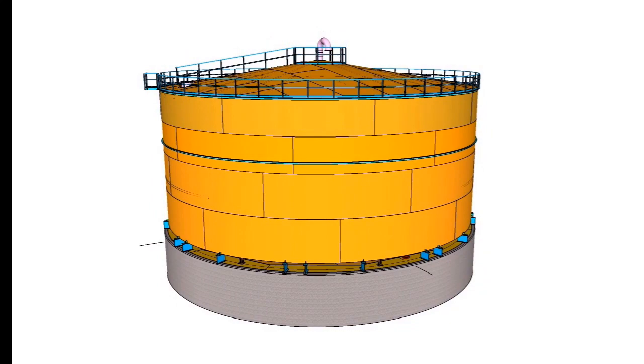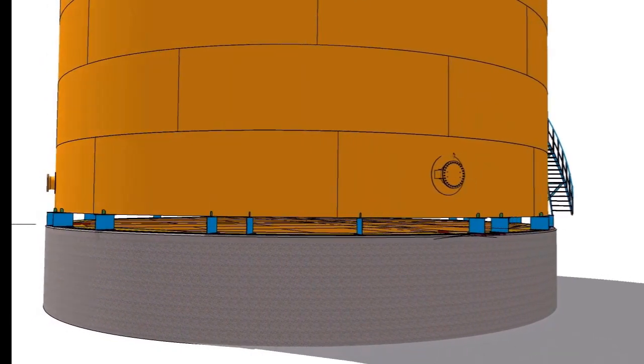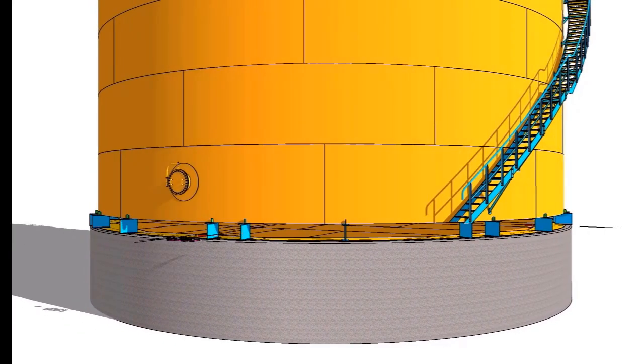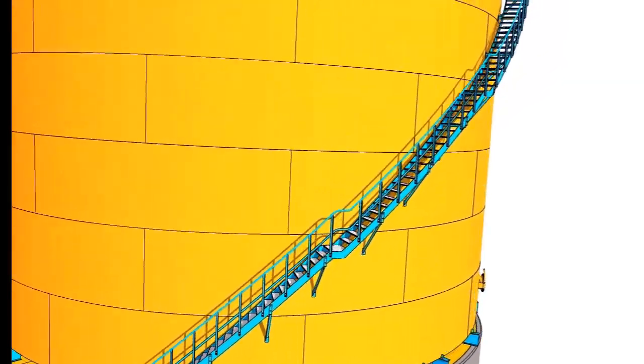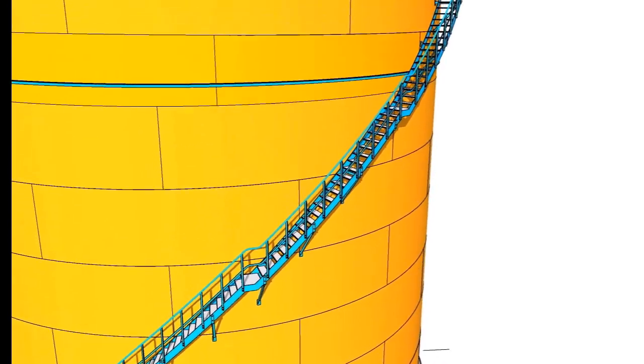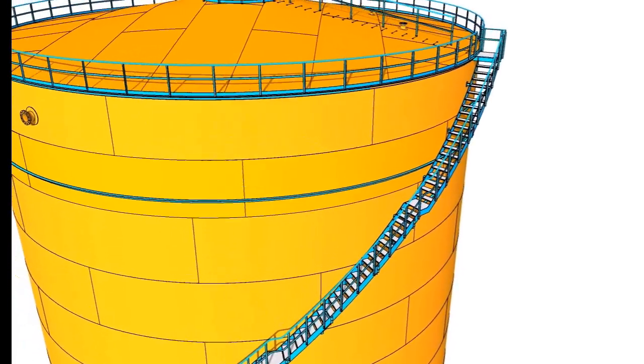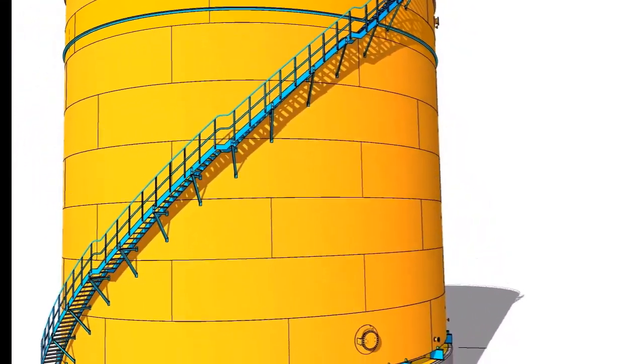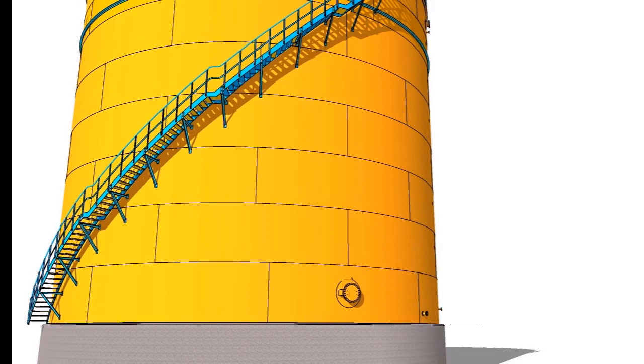After the welding of the shell courses, lower the shell on the annular plate. Install the nozzles, stairway, etc. Weld the shell to annular plate joint. Final welding shall be between the annular plate and the bottom plate.